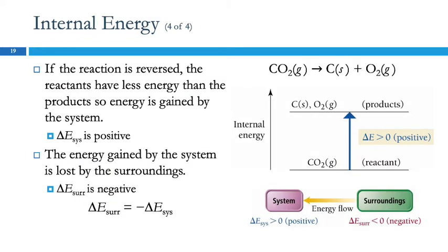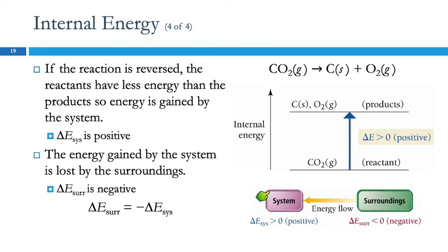Now the reaction is reversed. Instead of making carbon dioxide, we're taking carbon dioxide and decomposing it into its elements — carbon and oxygen. Carbon and oxygen still have higher internal energy than carbon dioxide; that's just what it is. So carbon dioxide is now the reactant — we're starting at the lower energy and going up. Final energy minus the lower initial energy gives a positive change in energy. This is like money coming into your account. The system is gaining energy, which comes from the surroundings, so the surroundings have a negative energy change. The two values are the same magnitude, opposite in sign.